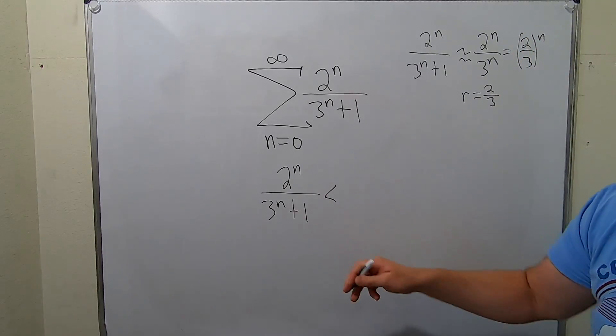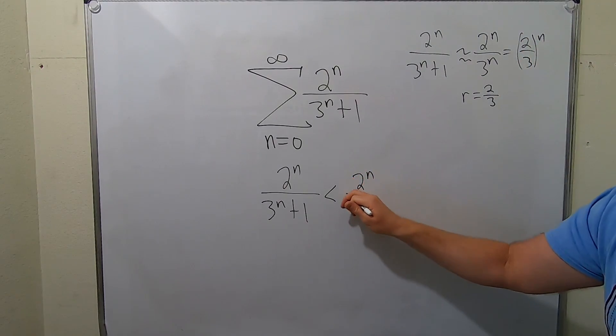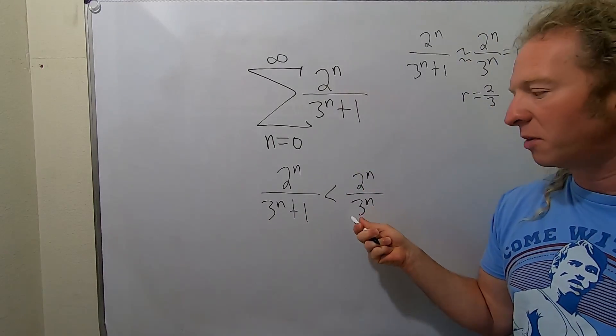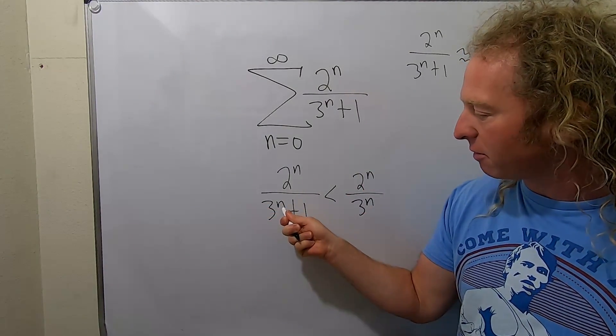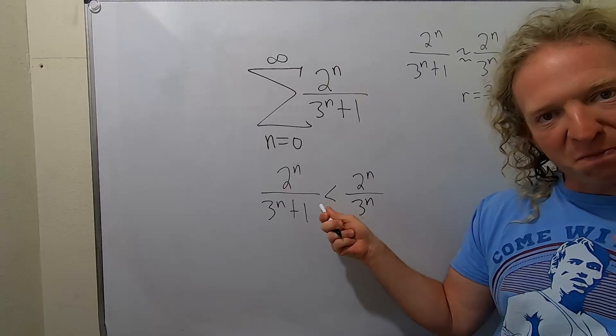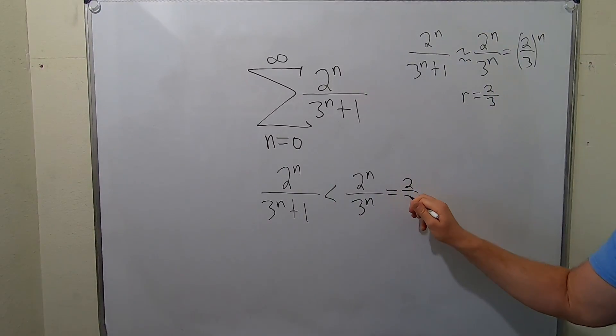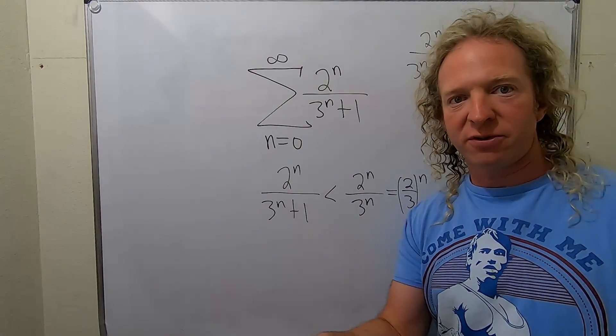So notice that you can drop the 1 because this fraction is smaller than this one because this number here on the bottom, 3 to the n plus 1, is bigger than 3 to the n. And this is 2 thirds to the n. So now we have to explain why the sum of these terms converges.